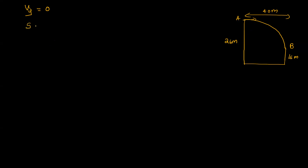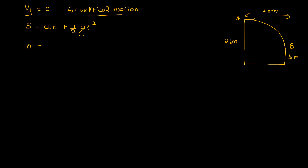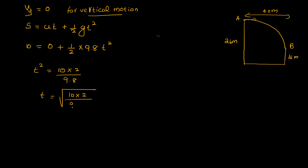The vertical distance is 10 meters. Using the kinematic equation, s equals Uy times t plus one-half times g times t squared. With vertical velocity equal to 0 and g equal to 9.8, we get t squared equals 10 times 2 divided by 9.8. Therefore t equals the square root of 20 divided by 9.8, which equals 1.428 seconds.